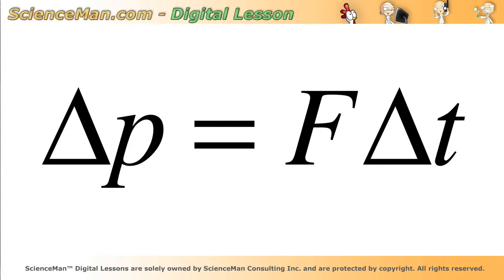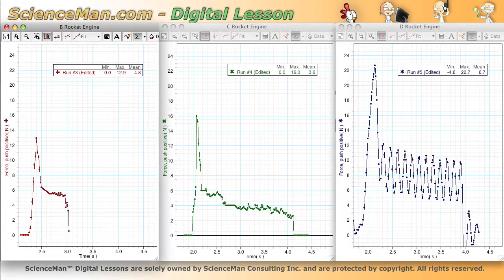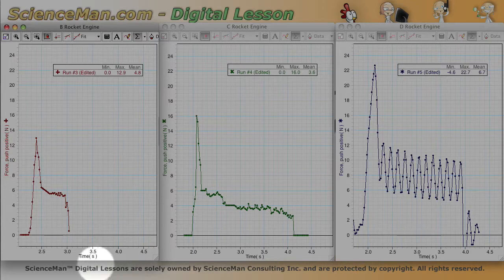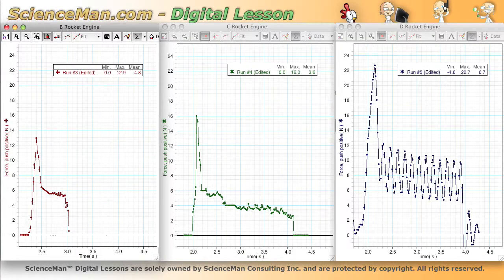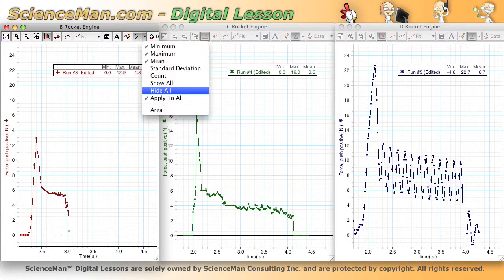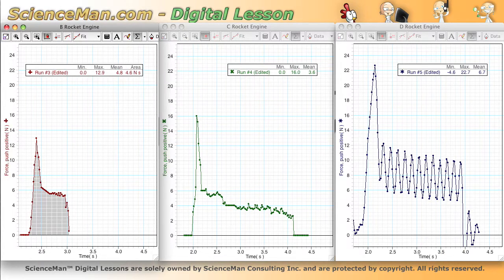So as we see this formula here, the change in momentum is equal to the force multiplied by the time that the force is applied. So if we go back to our data, what we really need to do is, since these are graphs of force versus time and we need to multiply force times time, the perfect thing to do here would be to calculate the area under the graph.